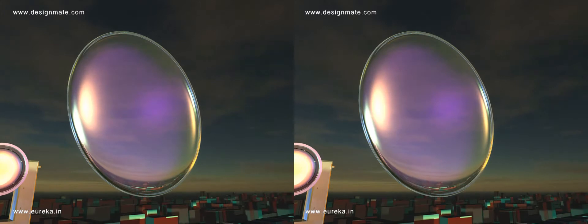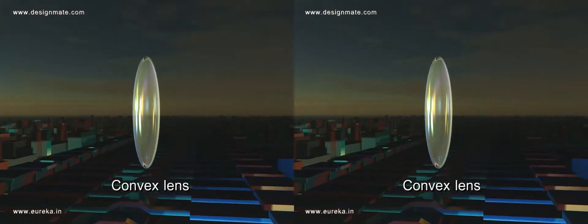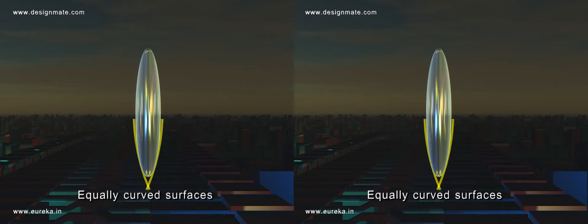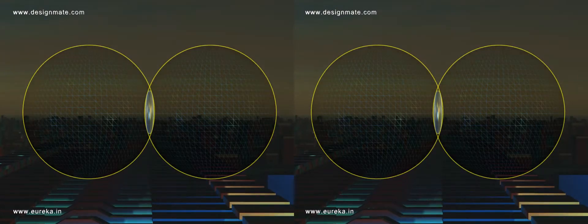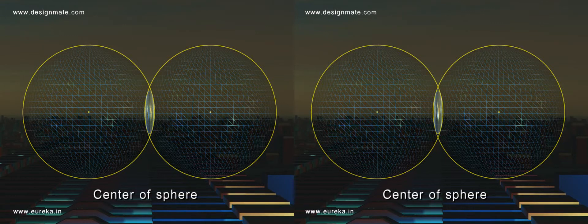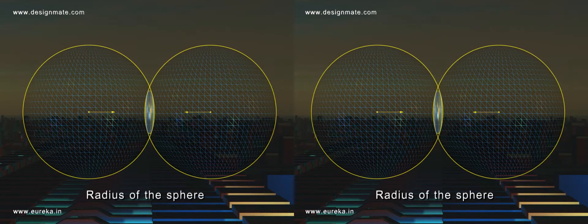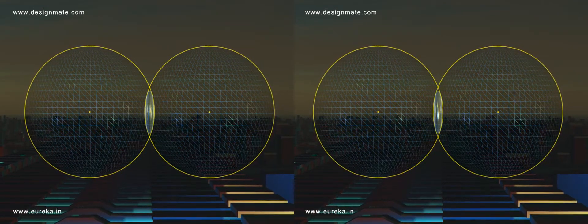A single piece of glass formed in this fashion is called a convex lens. We can consider the equally curved surfaces of the lens to be a small part of spheres. The center of the sphere is called the center of curvature of the lens, and the radius of the sphere is known as the radius of curvature of the lens.